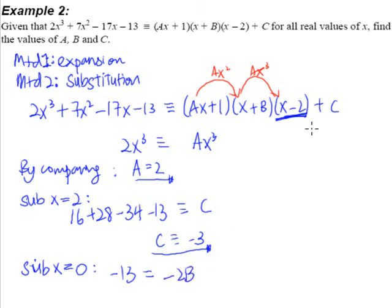And since we already know what is C, C is negative 3, and there you go, C is negative 3. So from here, we'll figure out that negative 2B is equal to negative 10. And therefore, this shouldn't be difficult at all. So B is equal to positive 5.